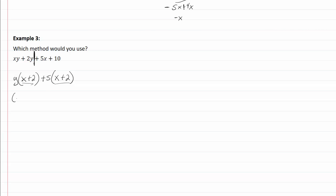So I pull out my common factor of x plus 2 and that's going to leave me with y plus 5. I look at it again, nothing there can be factored again, so we are done.